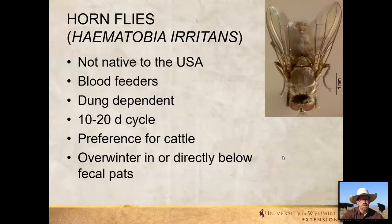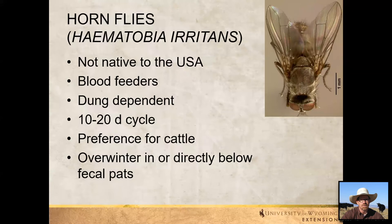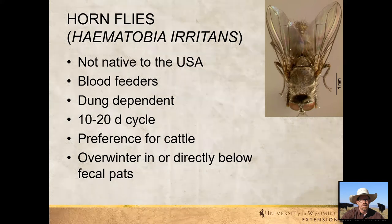Horn flies are a fly parasite of cattle that are not native to the United States — they were brought in when cattle were imported. They're blood feeders, also known as filth flies or dung-dependent flies because they lay their eggs in cow dung. They have about a 10 to 20 day life cycle from egg to adult, have a high preference for cattle, and are known to overwinter in or directly below those fecal pies — which is important for thinking about innovative management strategies.